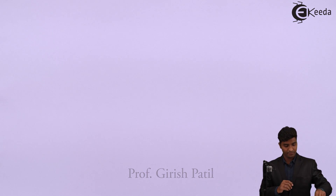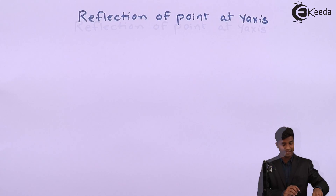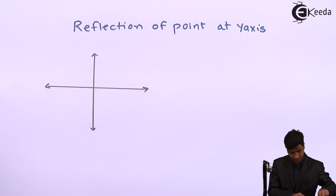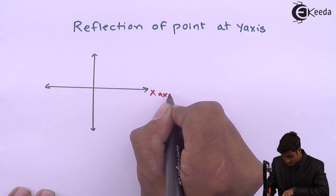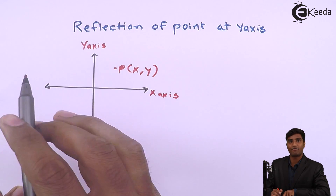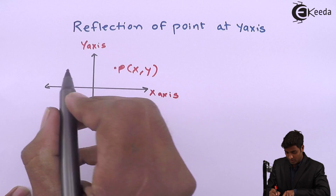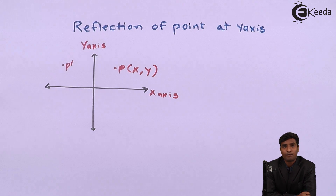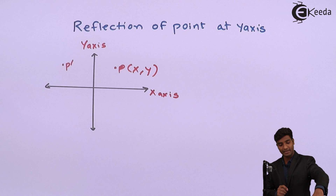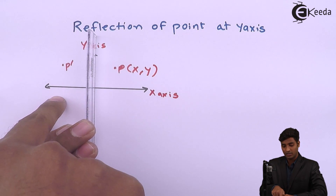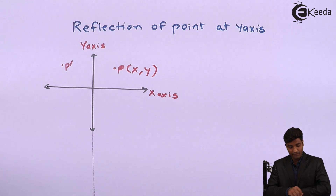We will do reflection of a point at the y-axis. I have to draw the coordinate axis — this is the x-axis and this is the y-axis. This is a point P(x, y) which is to be reflected about the y-axis. I will name the reflected point as P-dash. It is similar to reflection about the x-axis: we place the mirror on the y-axis and take the mirror image of that object.